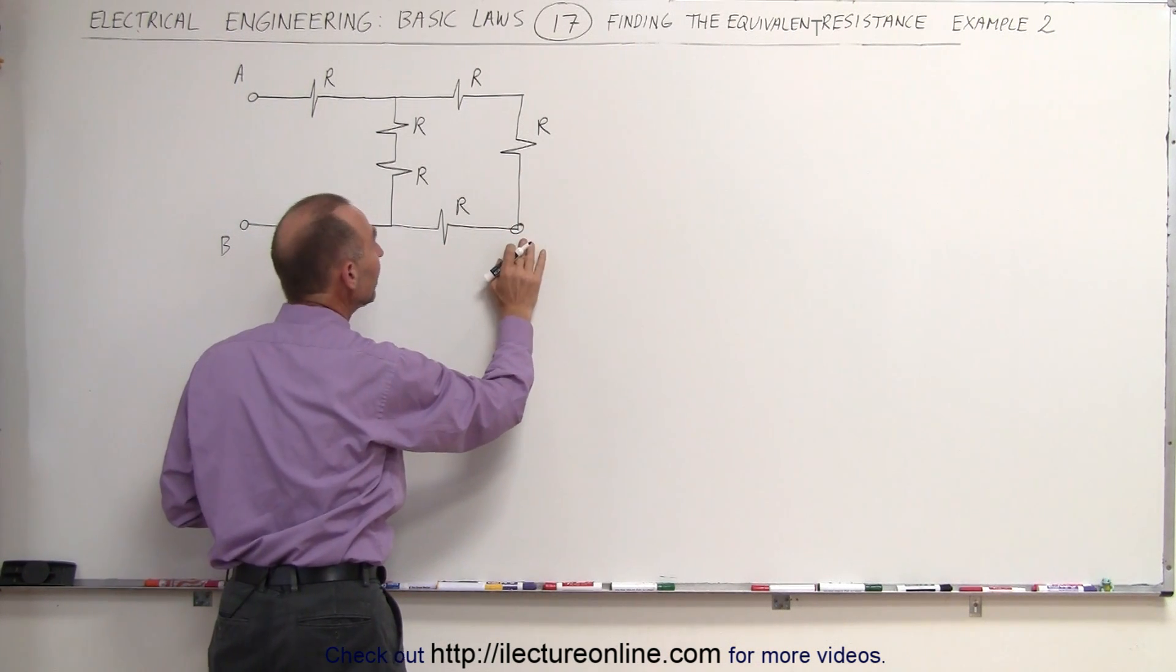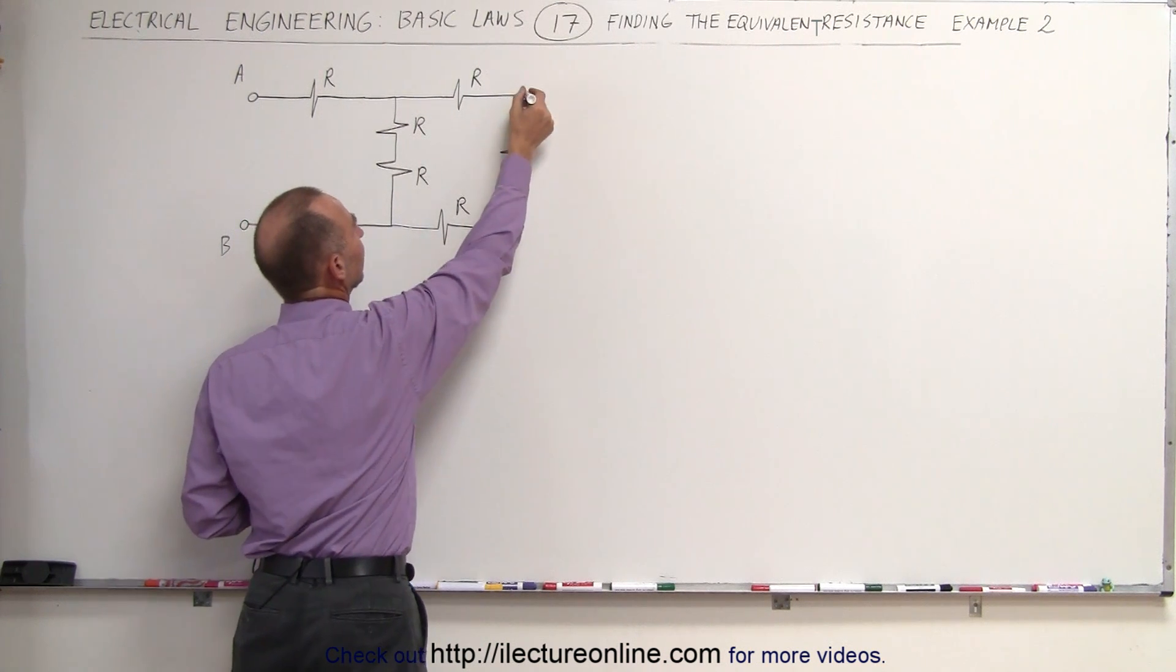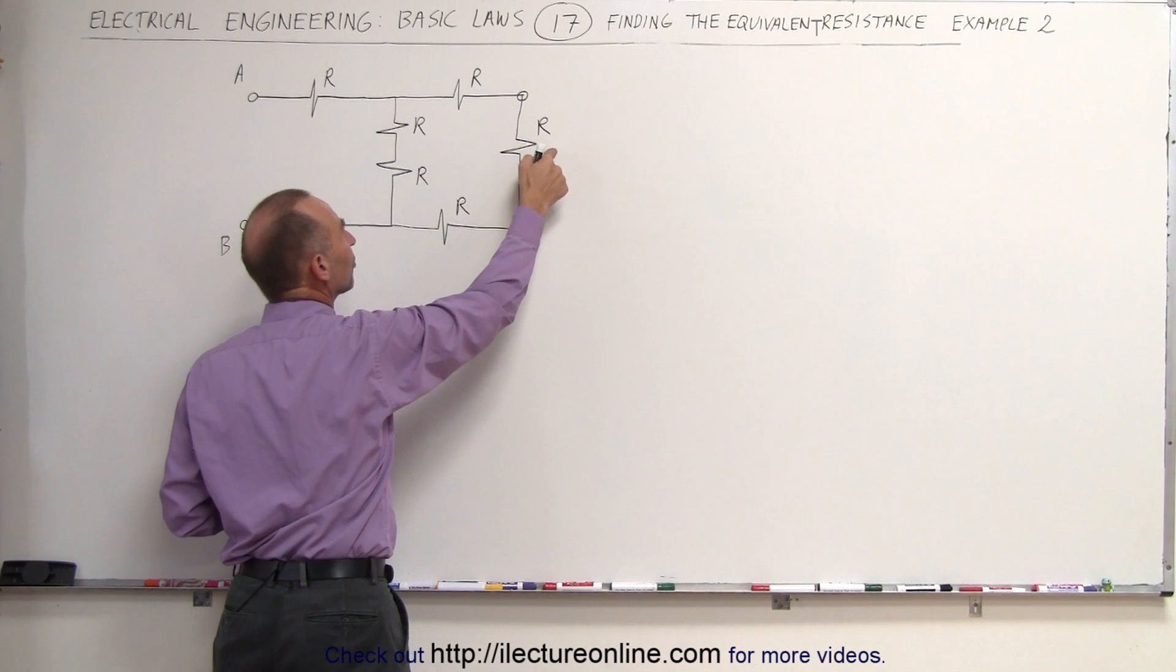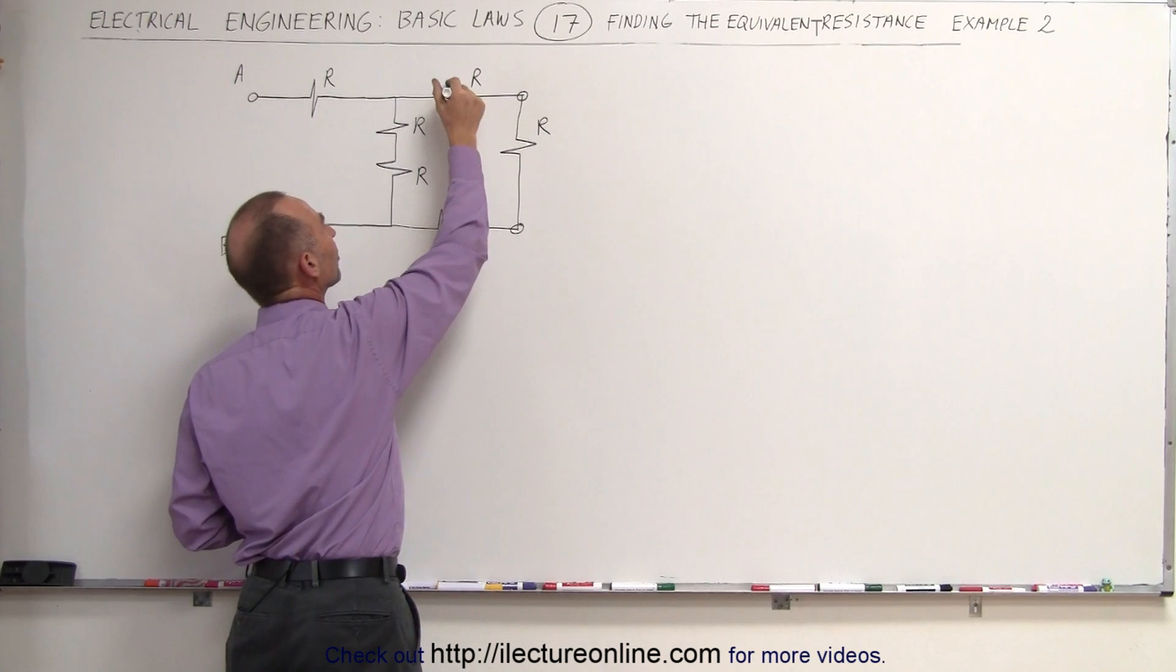The reason we can say so is that this node is shared by these two resistors exclusively. That means this resistor is in parallel with this resistor. This is a node that's shared exclusively by those two resistors and by no others. So these two are in series. That means all three then must be in series.